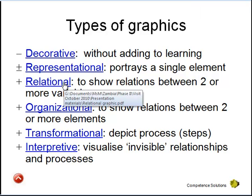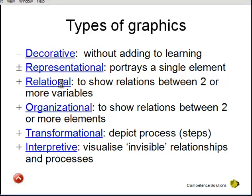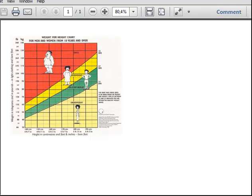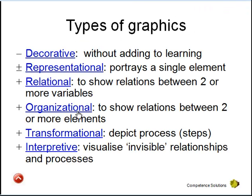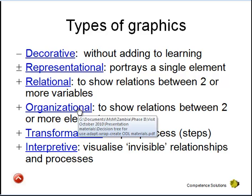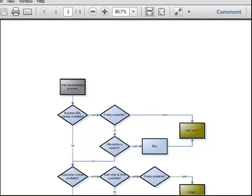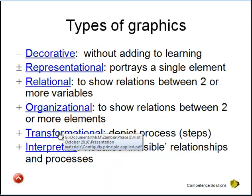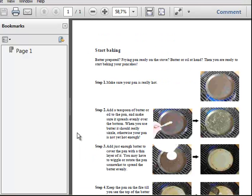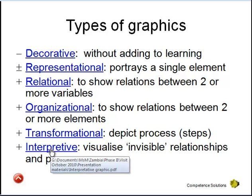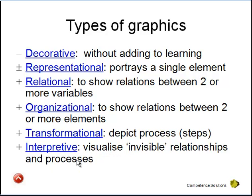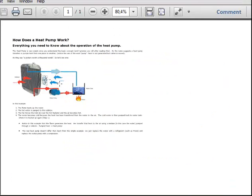The use of relational graphics to show relations between two or more elements — like in this example — is a good use of graphics. The same applies to organizational use of graphics, to show the relationships between two or more elements, for example in a flow chart. Transformational use of graphics depicts a certain process, where text is combined with graphics. And the interpretive use of graphics visualizes processes or relationships that are invisible in the real world — for example, how does a heat pump work?